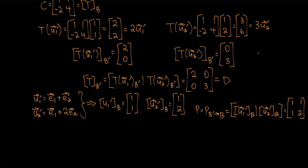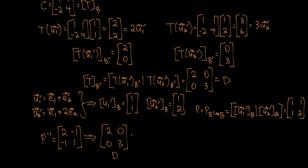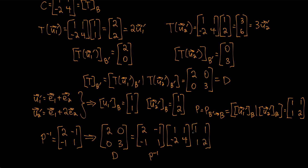That gives us P inverse. By swapping, negating, and dividing by the determinant, we get P inverse = [[2,-1],[-1,1]]. We can then verify: D = [[2,0],[0,3]] equals P inverse · C · P = [[2,-1],[-1,1]] · [[1,1],[-2,4]] · [[1,1],[1,2]]. So the matrices C and D are indeed similar.